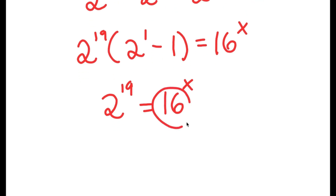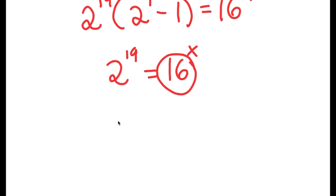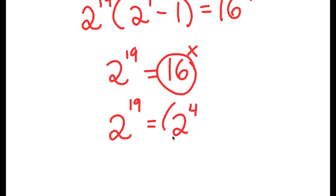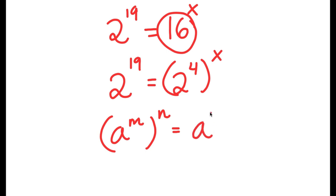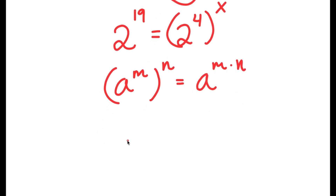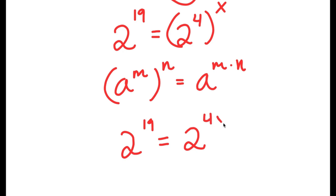Now, 16 is the same thing as 2 to the power of 4. So now I have 2 to the power of 19 is equal to 2 to the power of 4 to the power of x. And if I have something in the form a to the power of m to the power of n, this is equal to a to the power of m times n. So 2 to the power of 4 to the power of x equals 2 to the power of 4x.